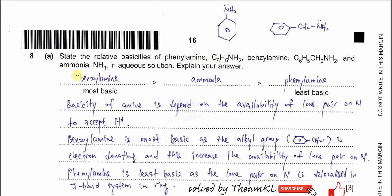First, we need to identify which one is the most basic amine. If we compare phenylamine and benzylamine, there is a small difference. The amine group in benzylamine is next to a CH2 group, and this whole group is electron donating, which means it donates electrons to the nitrogen and increases the availability of the lone pair.